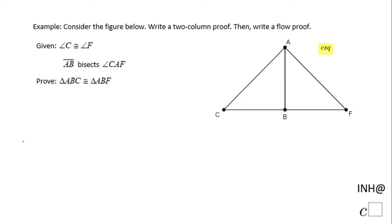First, whenever you have to do a proof, something is given and something needs to be proved. You notice angle C congruent to angle F. I'm going to model that on the picture so I know what I'm doing here. Then this is a very interesting statement: AB bisects angle CAF.